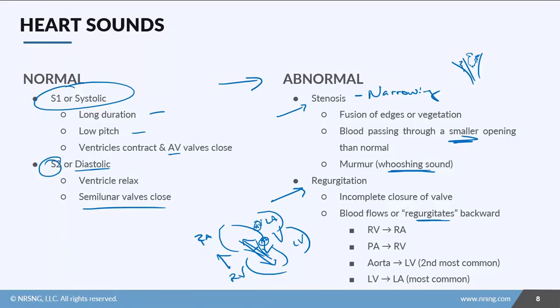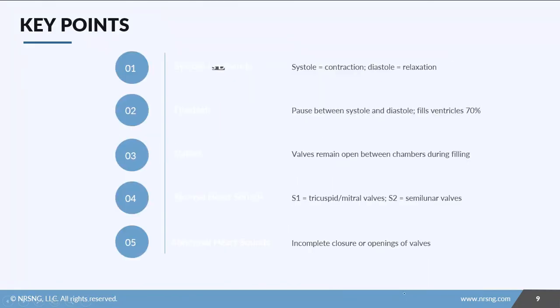From the aortic valve, blood can go back from the aorta through the aortic valve to the left atrium — that's the second most common type of regurgitation. Or it can go from the left ventricle back to the left atrium, which is the most common type of regurgitation.